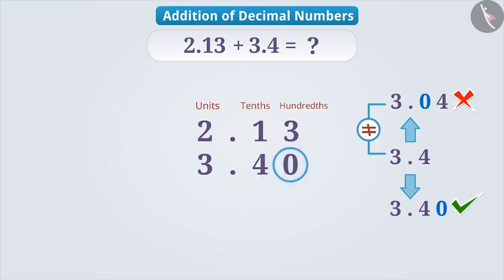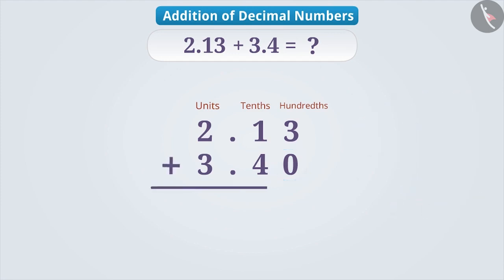Now, we have written the number one below the other. And with the help of 0, we have made the number of digits equal after the decimal point. We will add them the same way that we add whole numbers. Here, the sum of 3 and 0 is 3. The sum of 1 and 4 is 5. The sum of 2 and 3 is 5. Therefore, the sum of 2.13 and 3.4 is 5.53.